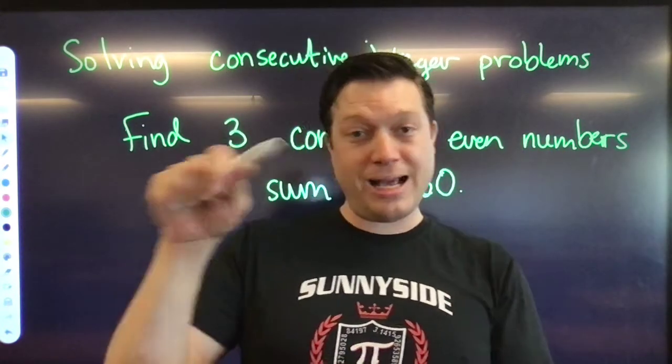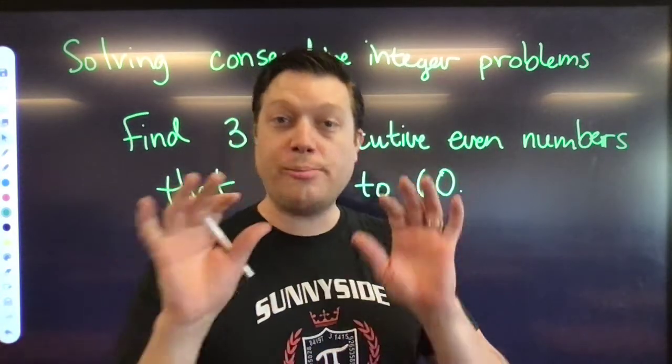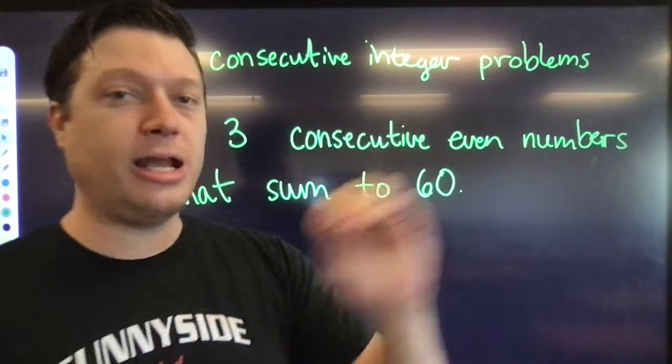They're consecutive because if you make a list of them, they are next to each other. So that's what we mean by consecutive, a list of numbers that are next to each other.